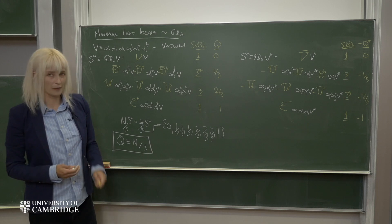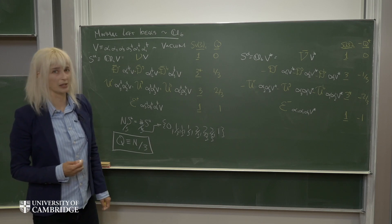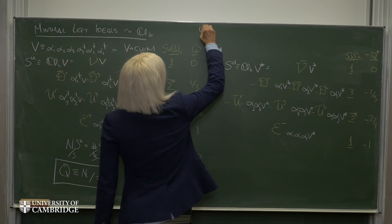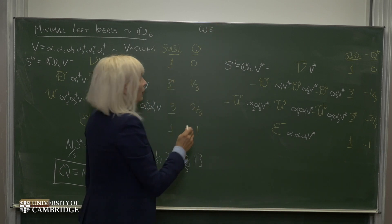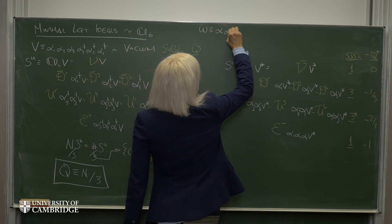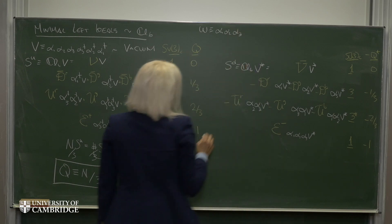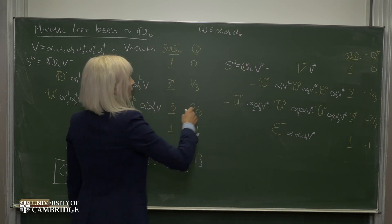In particular, if I were to define the object omega to be equal to alpha-1, alpha-2, alpha-3, and omega-dagger to be its Hermitian conjugate,